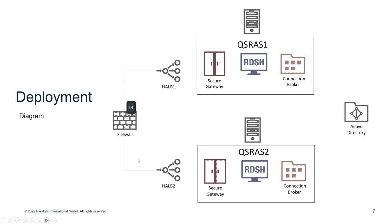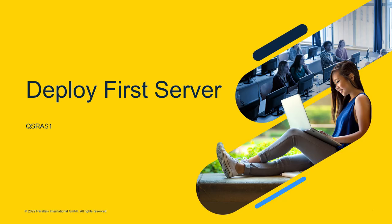Looking at the deployment diagram: the top scenario is QS-RAS1, the all-in-one — self-contained on one virtual machine with the secure gateway, connection broker, and RDSH server. The second scenario shows high availability with HALBs sitting in front and load balancing the secure gateways. Note that we don't need anything to load balance the connection brokers — they're automatically highly available when you have two or more.